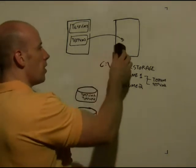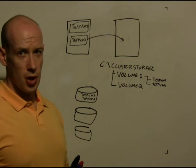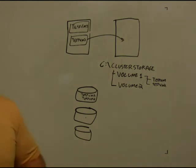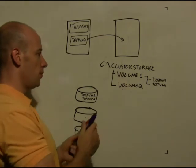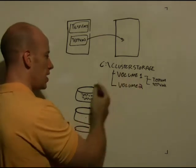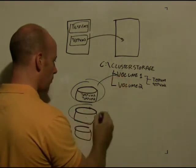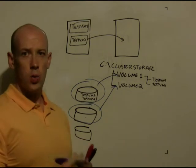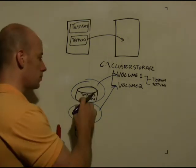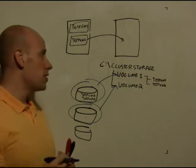So we don't have an owning node of the disk anymore. But we have something called a coordinator node. And essentially the way it works is that for each volume, for each portion, each disk, that maps to a folder,